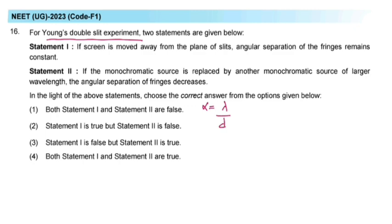Now students, as per statement 1, if screen is moved away from plane of slits, angular separation of the fringes remains constant. As we can observe, the distance between screen and slit, which we usually denote by capital D, is missing from this formula.